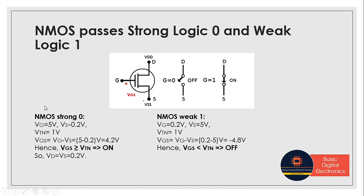Let's see how NMOS passes strong logic 0. Say the source voltage VS = 0.2 V and the gate voltage VG = 5 V (equal to VDD, so it is high voltage). The threshold voltage VTN = 1 V. Now VGS = VG − VS = 5 − 0.2 = 4.2 V. Since 4.2 V is greater than 1 V, VGS is greater than or equal to VTN.